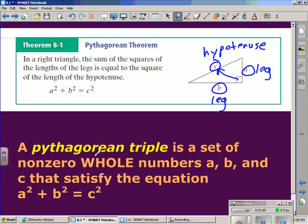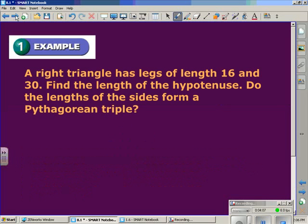We also have here the Pythagorean Triple, which is a set of non-zero whole numbers, a, b, and c, that satisfies the Pythagorean Theorem. Key word here is whole numbers, that's why it's capitalized. For a set of three numbers to be a Pythagorean Triple, they must work with the Pythagorean Theorem as whole numbers.